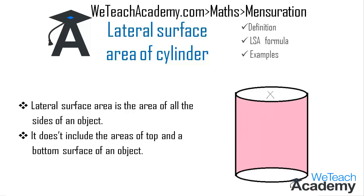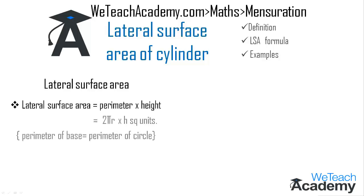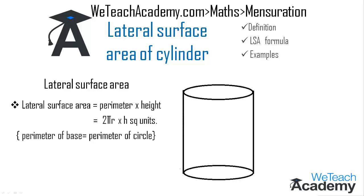The areas of the top and bottom circles are not included. Coming to the formula to find the lateral surface area of a cylinder: it is given by multiplying the perimeter of the base into its height. The perimeter of the base, that is the perimeter of the circle, equals 2πr, multiplied by the height h, giving us 2πrh square units as the lateral surface area of the cylinder.